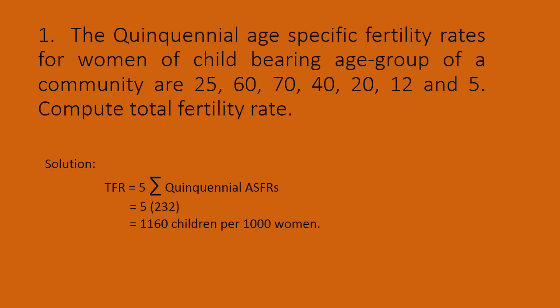Similarly, for the 20 to 24 age group the rate is 60, and for 25 to 29 it is 70. Now applying the formula: Total Fertility Rate (TFR) is equal to 5 into the summation of the quinquennial age-specific fertility rates.